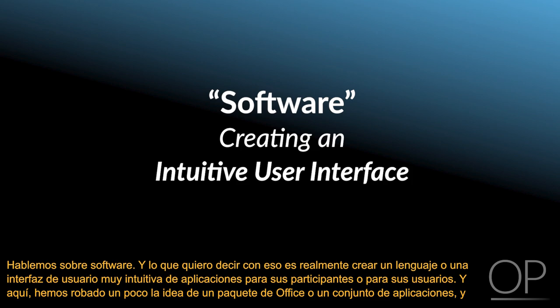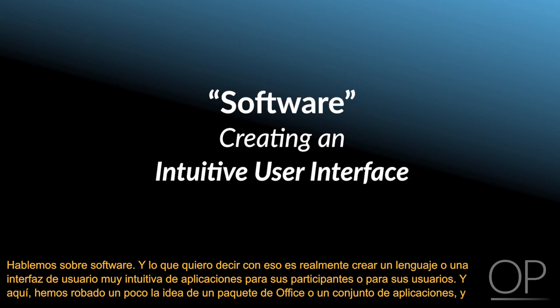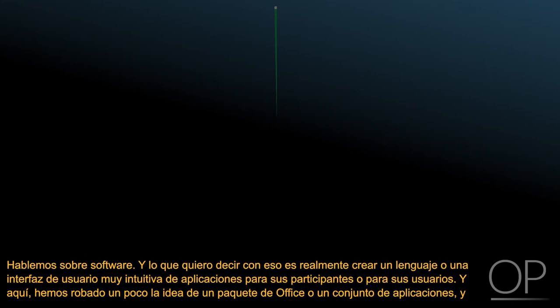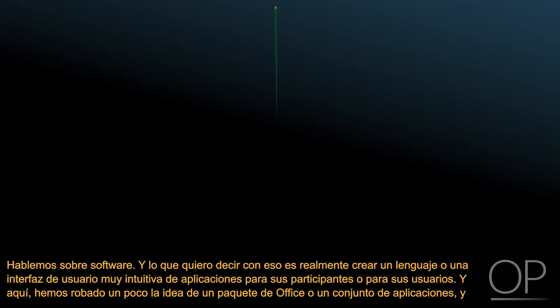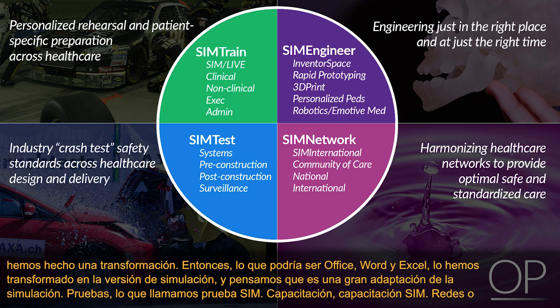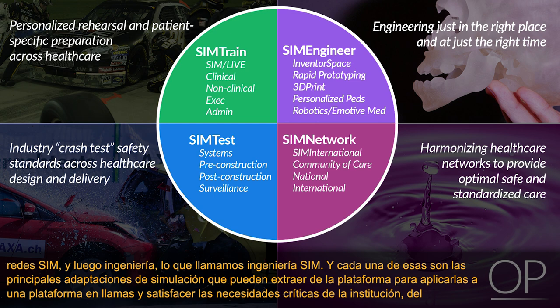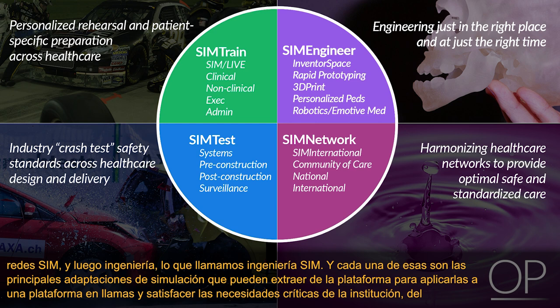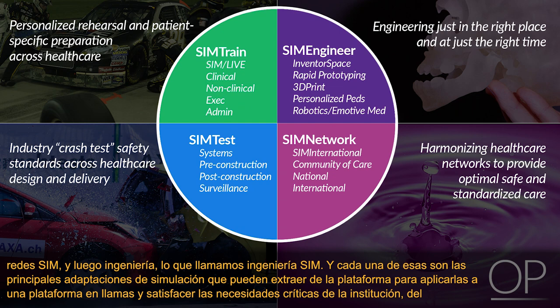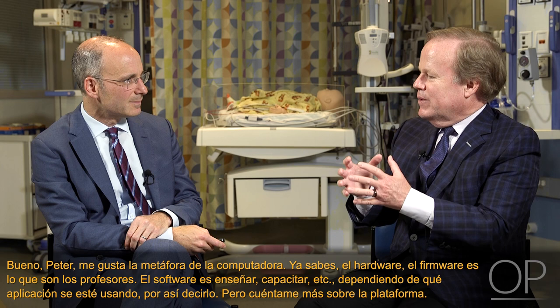Let's talk about software — really creating a language or an intuitive user interface of applications for your participants or users. We've borrowed a little from the idea of an Office suite and converted it into the simulation version. What might be Office, Word, and Excel, we've transformed into the major adaptations of simulation: Testing — what we call SimTest; Training — SimTrain; Networking — SimNetwork; and Engineering — SimEngineering. Each of those are major adaptations of simulation that you might pull off the shelf to apply to a burning platform or critical need of the institution.